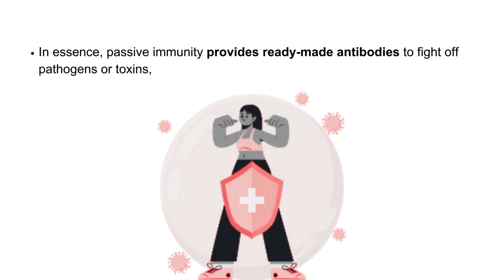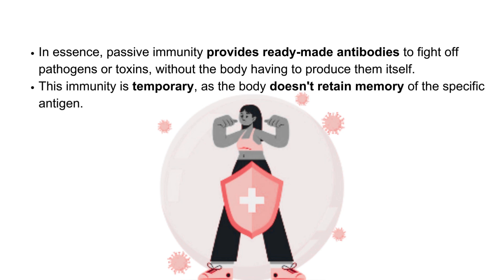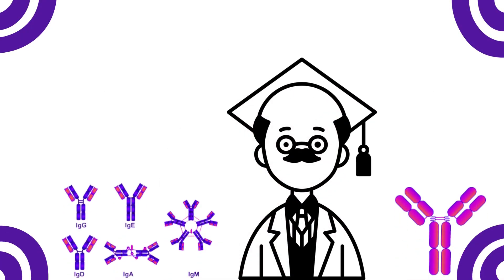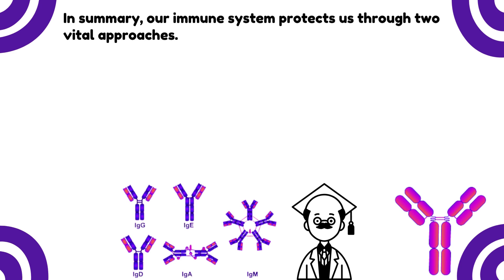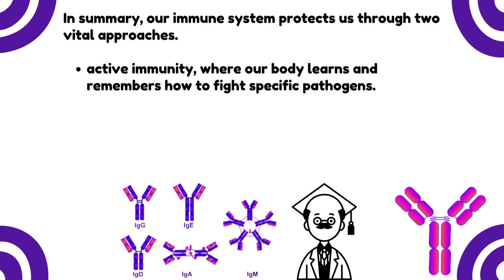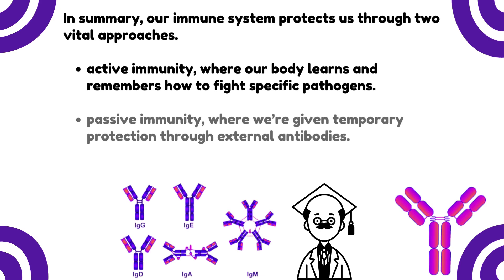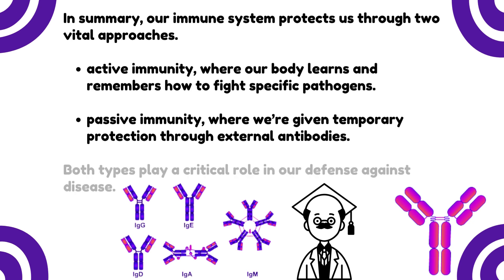In essence, passive immunity provides ready-made antibodies to fight off pathogens or toxins without the body having to produce them itself. This immunity is temporary, as the body doesn't retain memory of the specific antigen. In summary, our immune system protects us through two vital approaches: Active immunity, where our body learns and remembers how to fight specific pathogens, and Passive immunity, where we're given temporary protection through external antibodies. Both types play a critical role in our defence against disease.